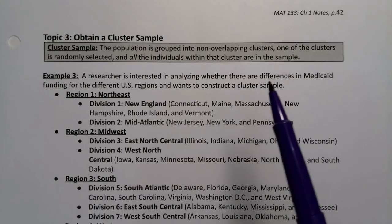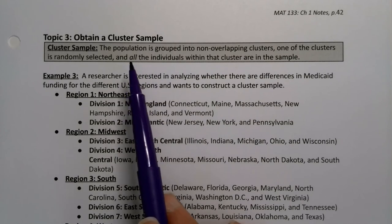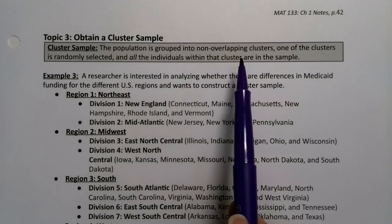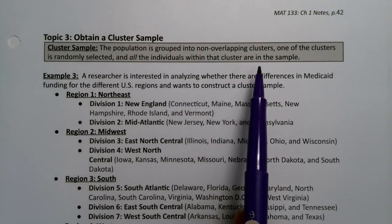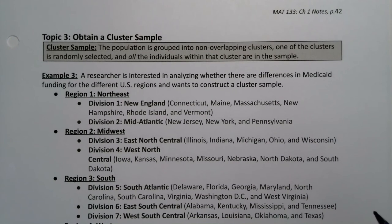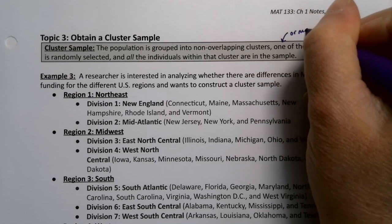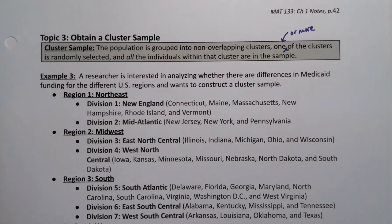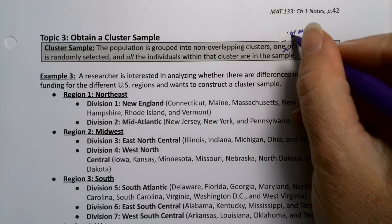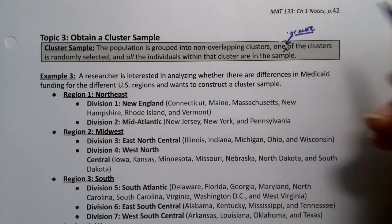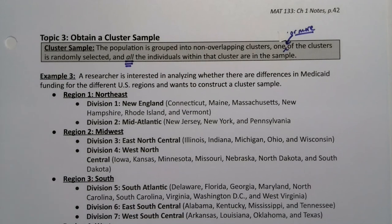The third type of sample we want to look at in this section is a cluster sample. A cluster sample is when the population is grouped into non-overlapping clusters. One or more of the clusters are randomly selected, and all of the individuals within that cluster are in the sample.